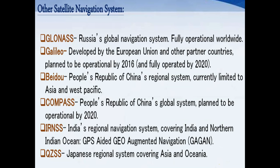GPS finds the location of people and all smart devices. Many countries today have their own GPS. GPS is owned by the USA and was started by the US military. Russia has developed its own global navigation system called GLONASS, which is fully operational worldwide. The European Union plans to operate their system — called Galileo — by 2020.